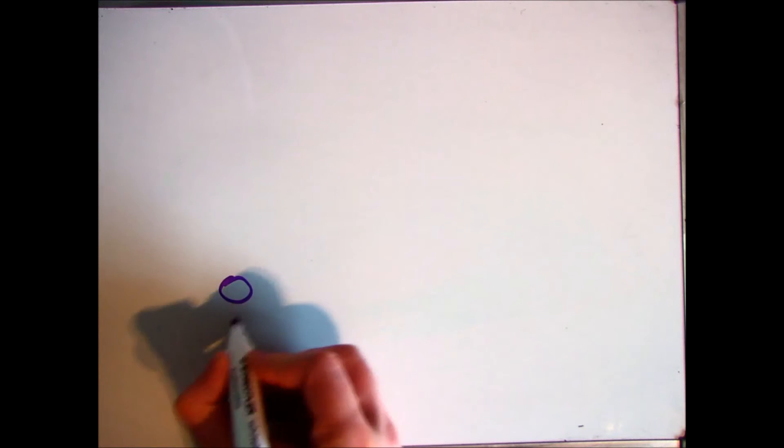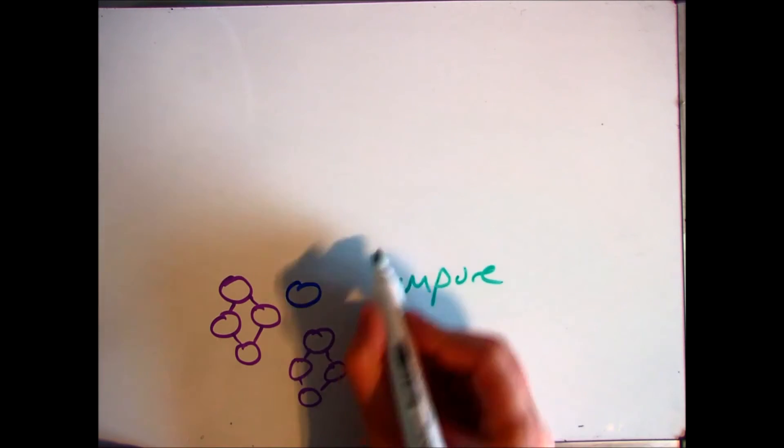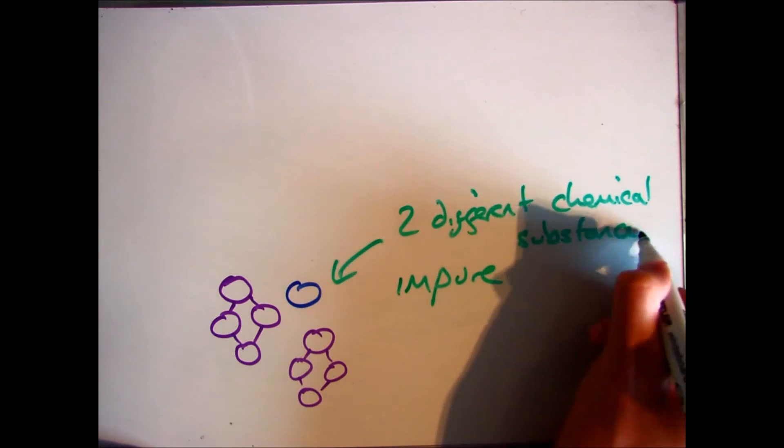Finally, if we have a look at what a mixture actually is in terms of the particle model, that can be anything. But here I've got two different elements and they're not joined together. There are no bonds between the purple and the blue. This tells you that it's impure. There are two different things that you'd need to separate.